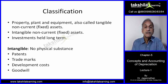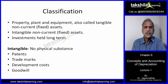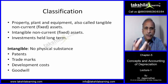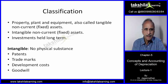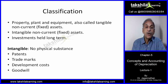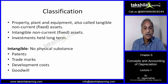Property, plant and equipment — these are the so-called tangible fixed assets, meaning which you can see and touch. Intangible non-current assets are like goodwill, patents, trademarks, development costs, etc.